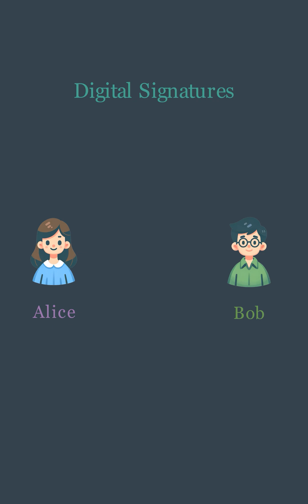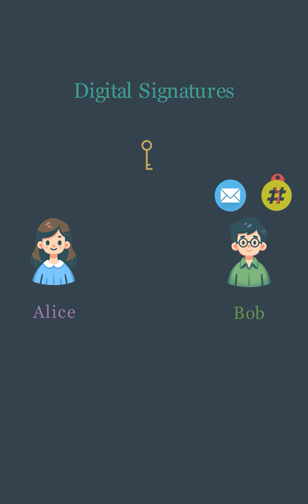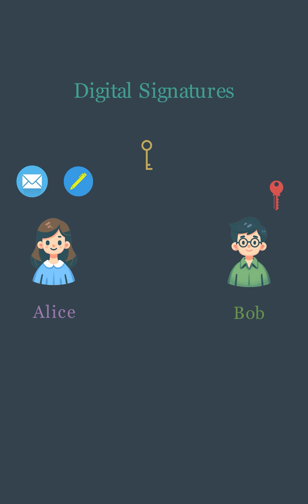What is a digital signature? Let's understand this with the help of Alice and Bob. Bob has a pair of keys called a public key and a private key. He keeps the private key to himself and makes the public key available to everyone. When Bob wants to sign a message, he first creates a hash of the message, then encrypts or signs this hash using his private key. He sends both the original message and the signature to Alice.